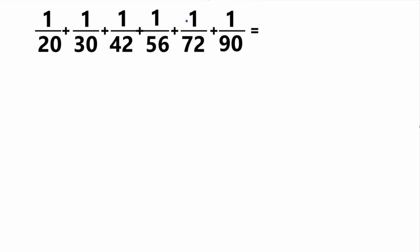Here we have a bunch of fractions that are being added together. So 1 over 20 plus 1 over 30 plus 1 over 42 plus 1 over 56 plus 1 over 72 plus 1 over 90. And we need to solve this.